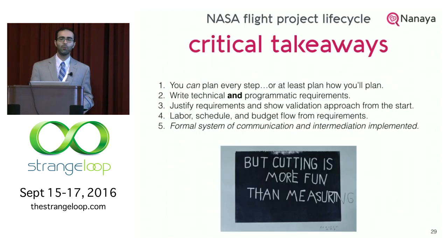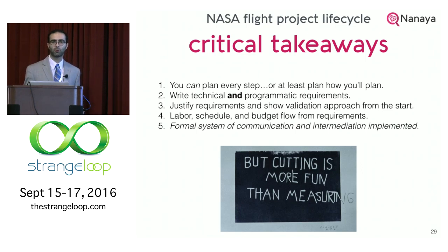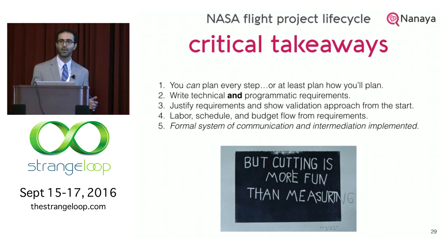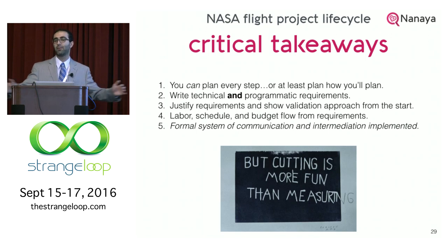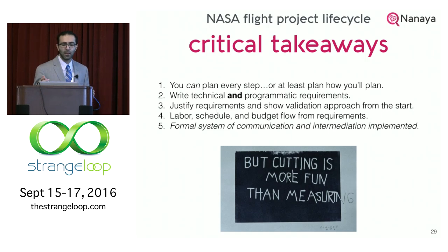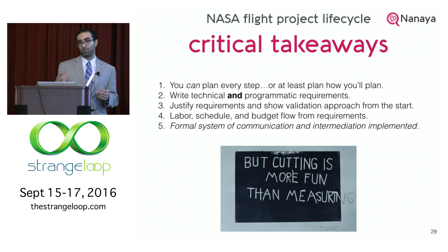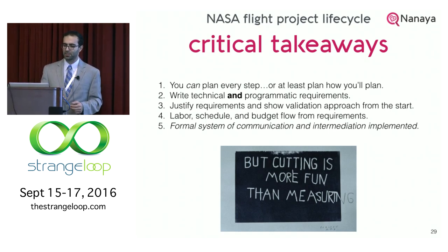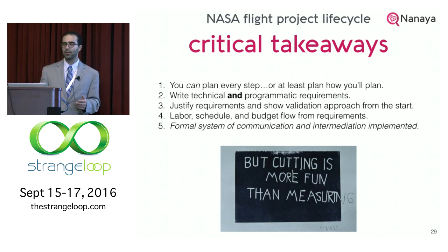Critical takeaways: you actually can plan every step. And even if you can't plan it exactly, you can at least plan how you will plan it. A part of doing that is writing technical and programmatic requirements — not just technical things, but how the entire team will work together. Make sure there is a consistent set of goals and language everyone is using. Justify requirements so there's a reason they're there. Also, have a way to make sure what you're building can actually be tested — I've seen a system where requirements were written but there was no good way of testing them, it didn't pass reviews, and was sent back into development. From all these requirements and vetting them, you can get labor, schedule, and budget that end up being very accurate. A formal system of communication is essential so everyone uses the same language.